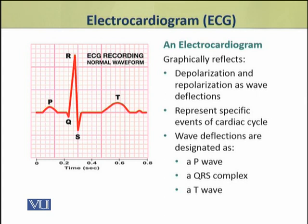An electrocardiogram is in the form of a graph that reflects the various phases of the heartbeat. It reflects depolarization and repolarization as wave deflections. These wave deflections represent specific events of the cardiac cycle.